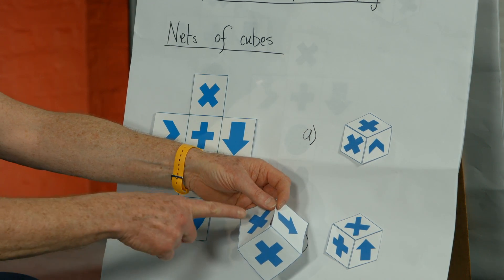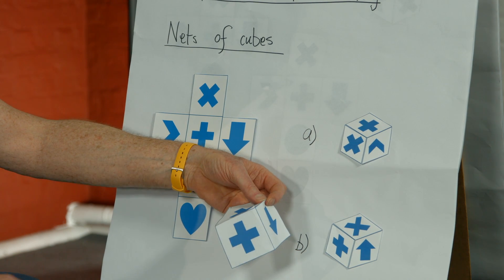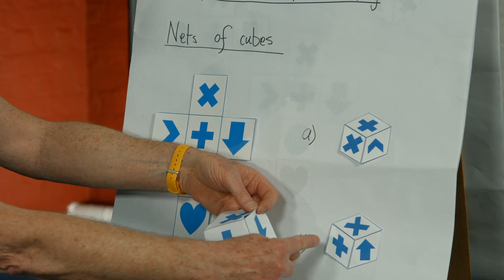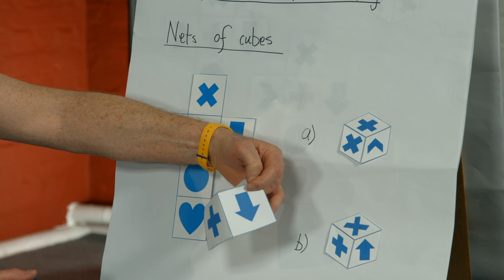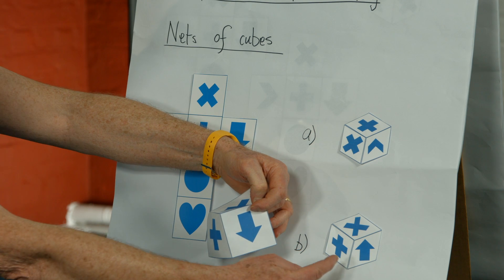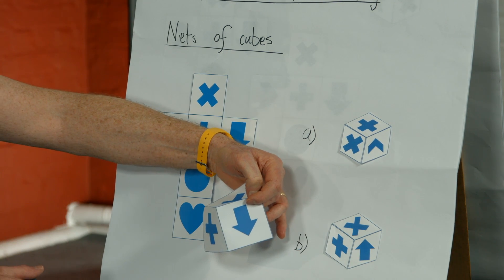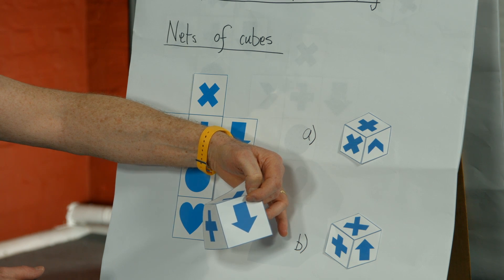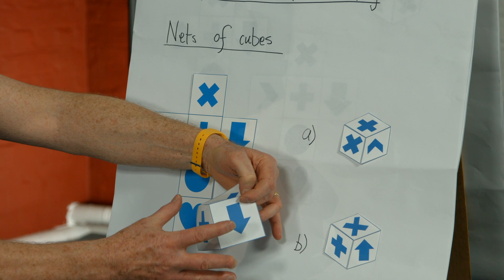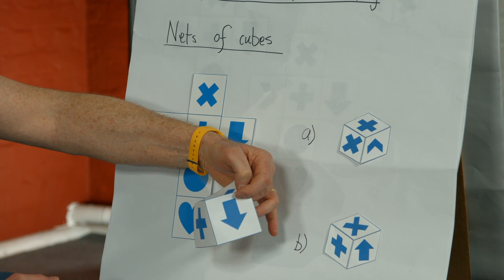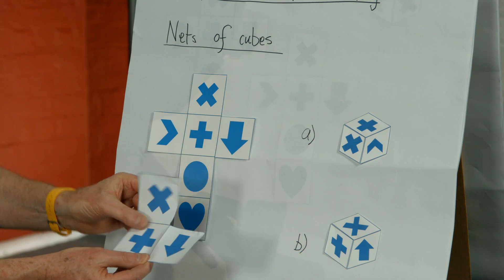Well, I can see on the top I've got the multiply sign, which is correct. On this face I've got the plus sign, which again is correct. But on the third face I've got an arrow pointing upwards on the 3D representation, but it's pointing downwards on my model here. And so we now know that this one can't be made from the net.